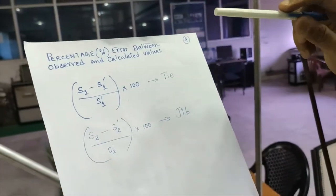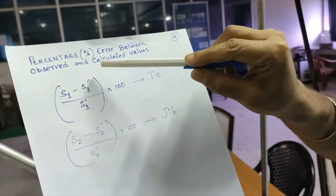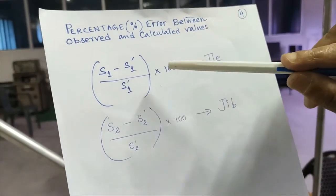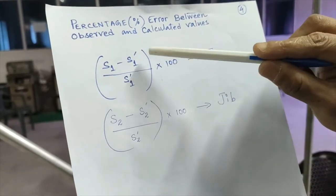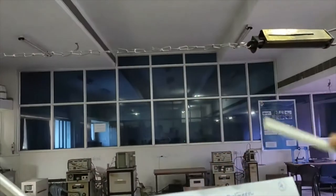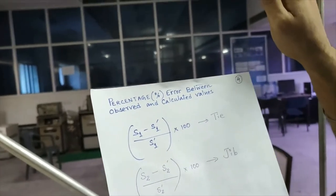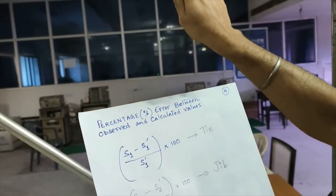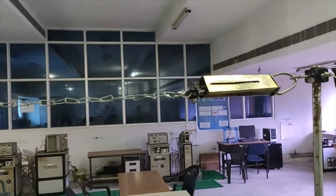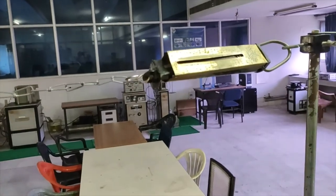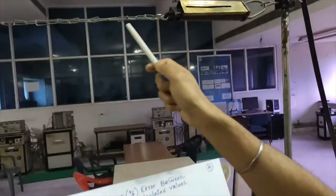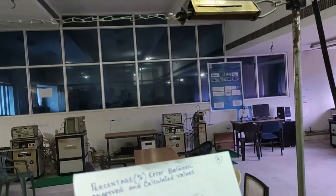Finally, we will calculate the percentage error between observed and calculated values. S1 minus S1 dash divided by S1 dash into 100. This is for the tie member, where S1 is the magnitude measured by this spring balance. This is the spring balance reading for S1, the tensile force. And S1 dash is the calculated value for the tensile force, calculated by means of similar triangle property.